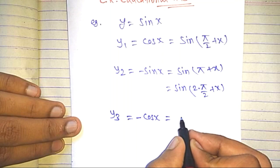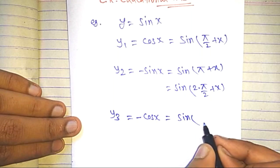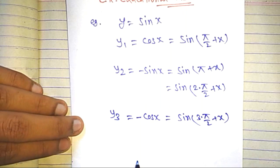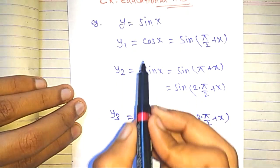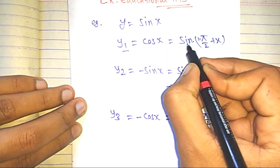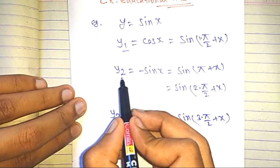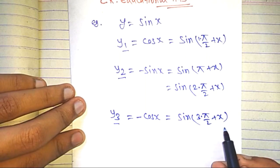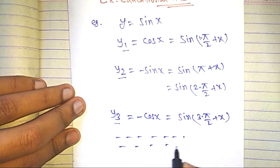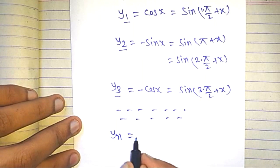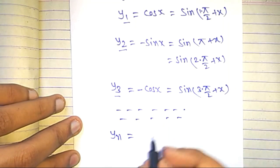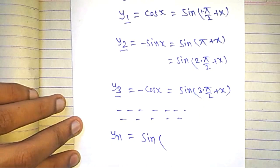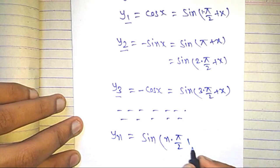Here we can see that when differentiating the function the first time we get sin(1·π/2 + x), the second time sin(2·π/2 + x), and the third time sin(3·π/2 + x). Further differentiating up to yn, this becomes sin(n·π/2 + x). This is the nth derivative of sin(x).